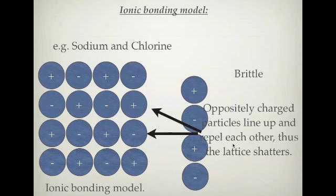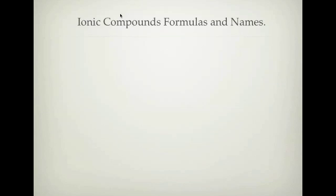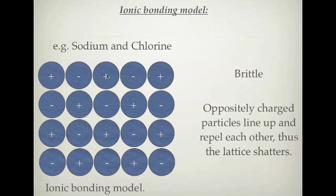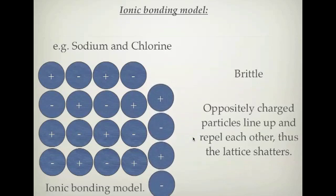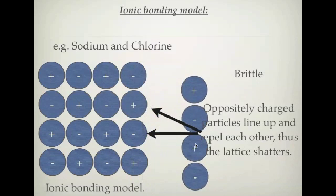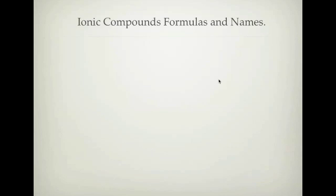That's the ionic bonding model explaining all the different properties. If you don't understand, go back and watch from the start, and if you still don't understand please send an email or see me in class. The next topic is how to write ionic compound formulas and name them — that will be in the second podcast for ionic compounds. You should now be able to explain all the properties using this bonding model.